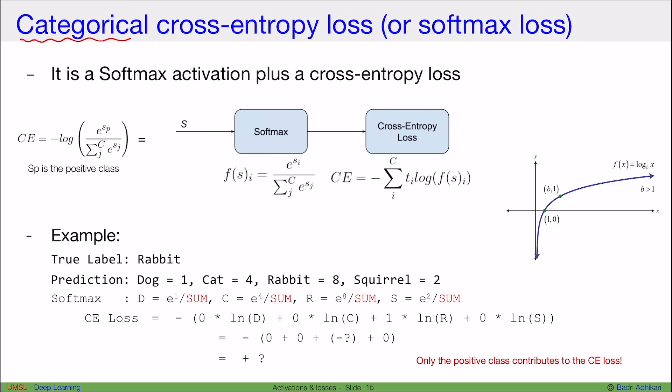Next, we will look at the categorical cross-entropy loss, that is the loss when we have multiple classes, more than two classes. This is also known as the softmax loss.